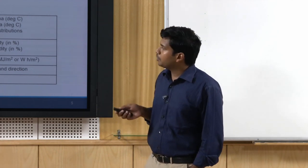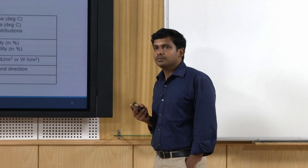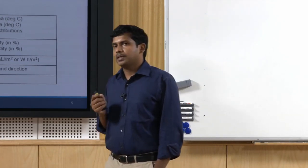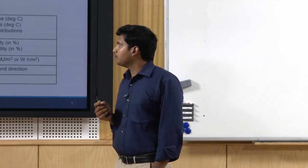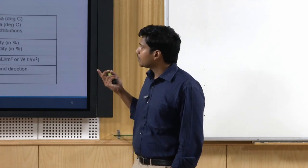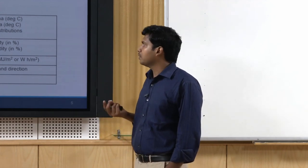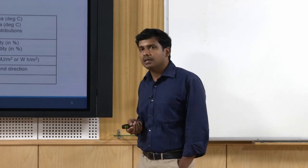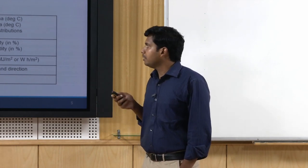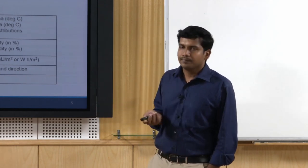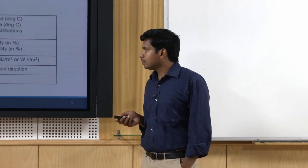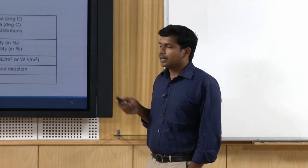Followed by humidity — we take readings twice a day, which is important. Two main time positions are important: one is early morning, which is typically high, and then early afternoon relative humidity. Solar radiation is expressed in terms of monthly mean daily total, then wind speed and direction, and rainfall.